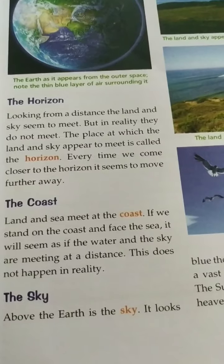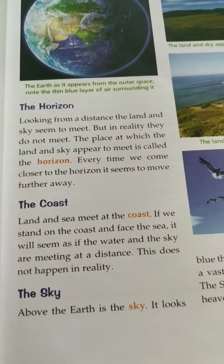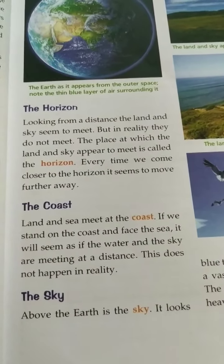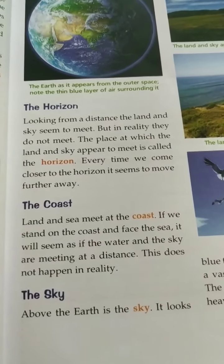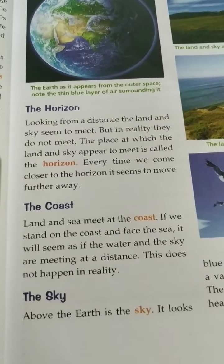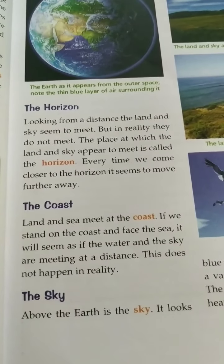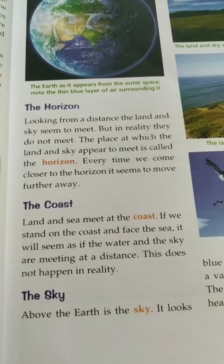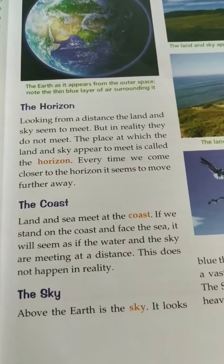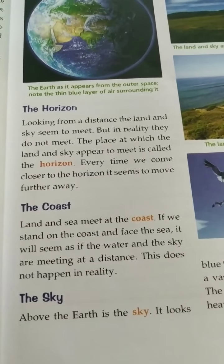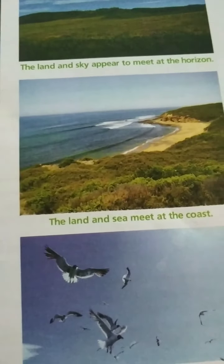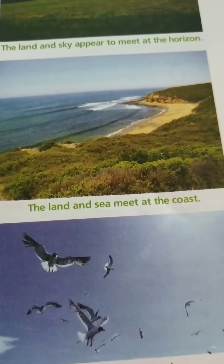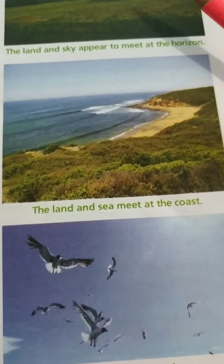The coast is where the land and the sea meet. If we stand on the coast and face the sea, it will seem as if the water and the sky are meeting at a distance. This does not happen in reality — like the horizon, at the coast the land and sea appear to meet, but in reality they do not.